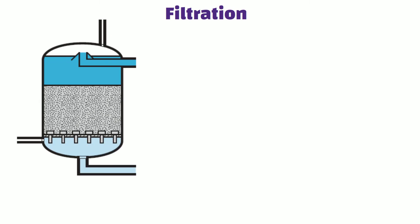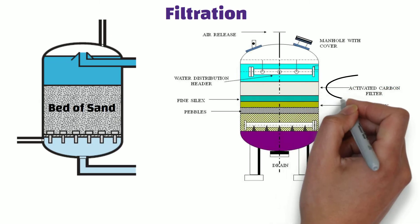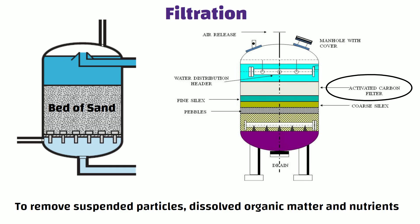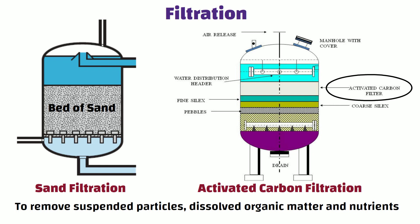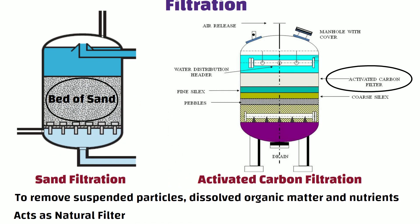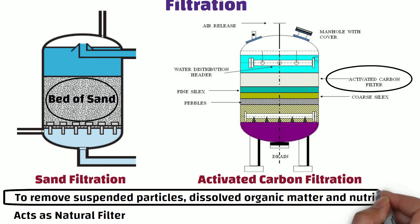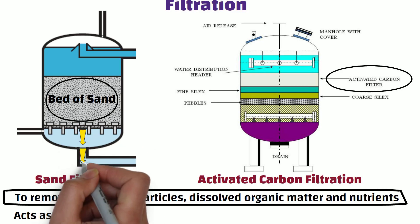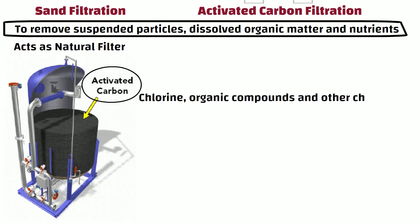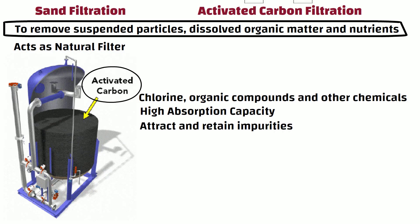The filtration process in STP involves passing waste water through a bed of sand or activated carbon filters to remove any remaining suspended particles, dissolved organic matter and nutrients. There are two types: Sand Filtration, where waste water is passed through a sand bed that traps suspended solids and organic matter, with filtered water collected at the bottom; and Activated Carbon Filtration, where activated carbon filters remove impurities such as chlorine, organic compounds and other chemicals. Activated carbon has a high absorption capacity, enabling it to attract and retain impurities, resulting in purified water.